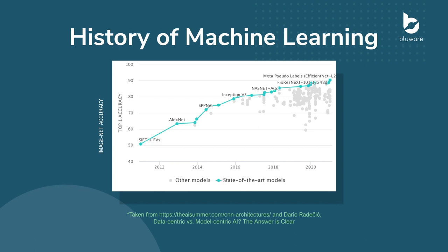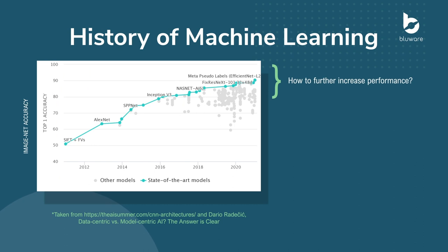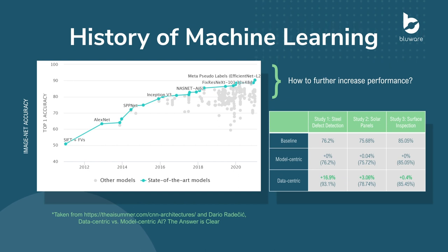As machine learning architectures have evolved over the past couple of years, we've seen substantial improvements on various benchmark datasets such as ImageNet. However, we now only see minimal improvement in performance by using this model-centric approach. This industry benchmark dataset has been the same year after year, unmodified, and one of the best ways to improve model performance is by taking a data-centric approach where you focus on the quality of the labels. This will have a profound impact on model performance, and in many examples the data-centric approach actually yields a more accurate prediction.